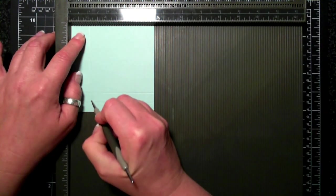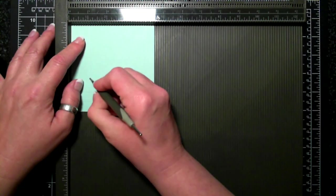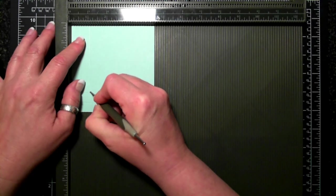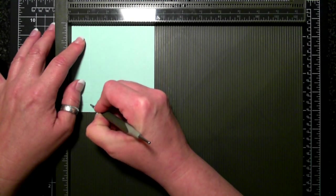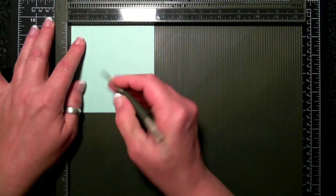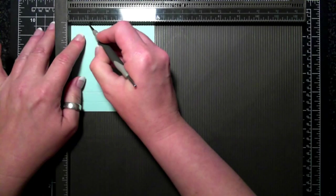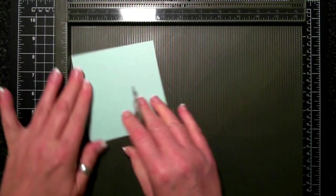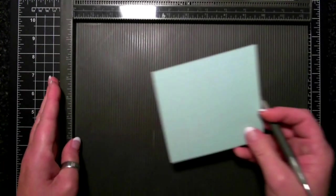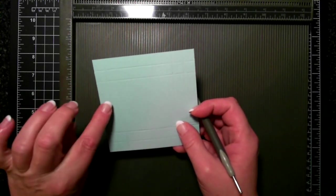Third time's the charm. Okay, so that is four and a half by four and a half scored at a half an inch and one inch on all four sides.